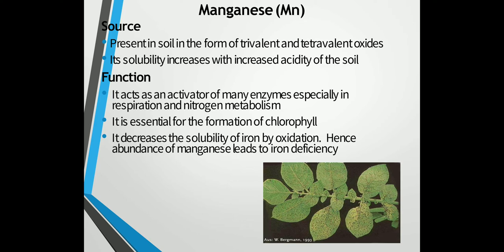Manganese acts as an activator of a number of enzymes, especially those involved in respiration and nitrogen metabolism. It is essential for the formation of chlorophyll. It decreases the solubility of iron by oxidation, hence abundance of manganese leads to iron deficiency.